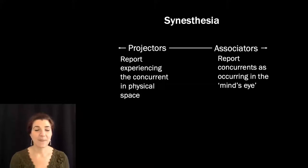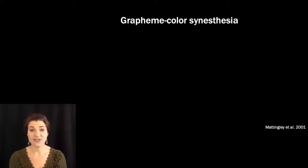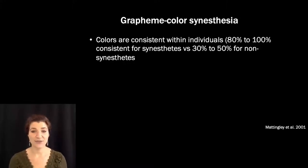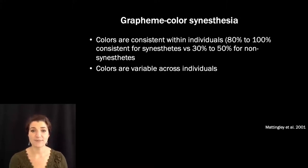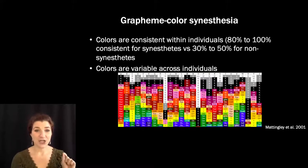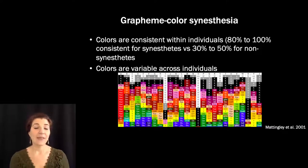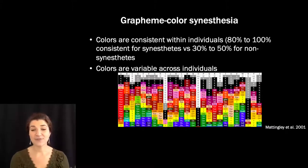Let's look at a few other kinds of synesthesia. One of the most common forms is what Tiffany described — grapheme-color synesthesia, in which letters or numbers are associated with colors. Within individuals, the concurrents are extremely consistent: if one is yellow for Tiffany, it always will be. But the specific concurrents tend to be variable across individuals — one might be yellow for Tiffany but blue for somebody else. This schematic shows the concurrents that different synesthetes have for different letters. Each column is a letter, each row is a person. There are some consistencies — I, O, X, and Z tend to be black and white — but otherwise there's lots of variability across individuals.